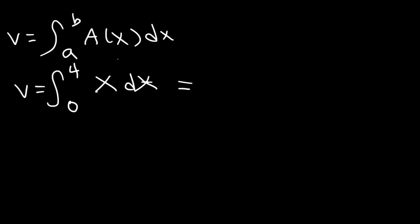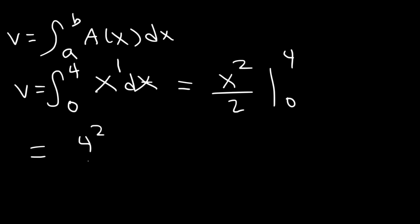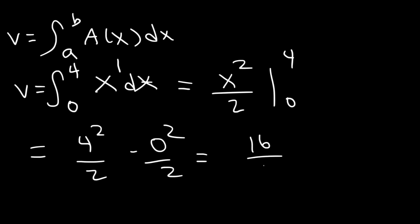The antiderivative of x is x squared divided by 2, evaluated from 0 to 4. Plugging in 4: 4 squared is 16, and 16 divided by 2 is 8. Plugging in 0 gives 0. So the answer is 8.